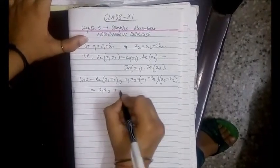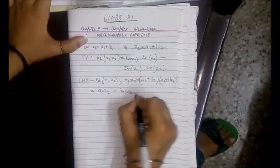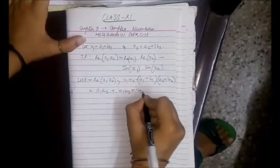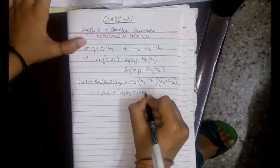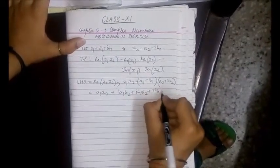Plus iota A1 into B2, plus iota B1 into A2, and plus iota square B1 into B2.